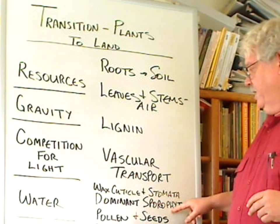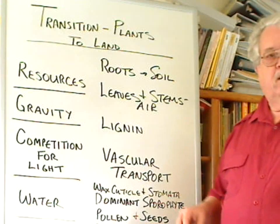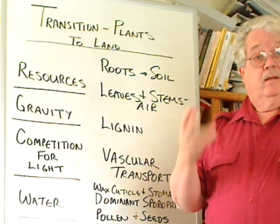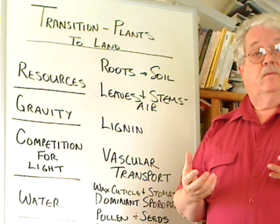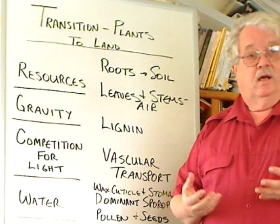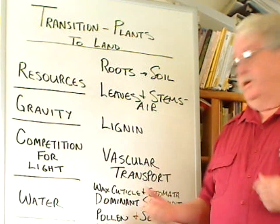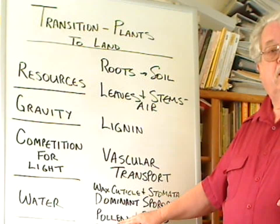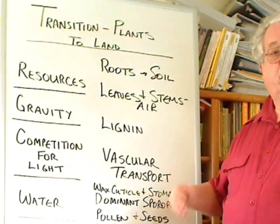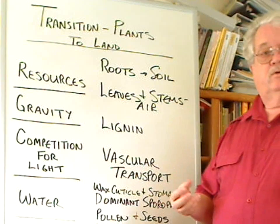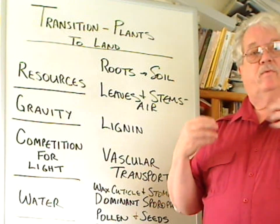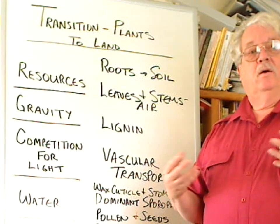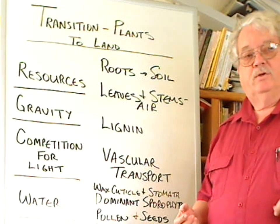The fact that the sporophyte in the alternation of generations is the dominant form, and that basically the gametophyte is a parasite upon the sporophyte generation. The development of pollen allows the male fertilization cells to be passed from one plant to another over great distances, either by wind or through insect pollination.